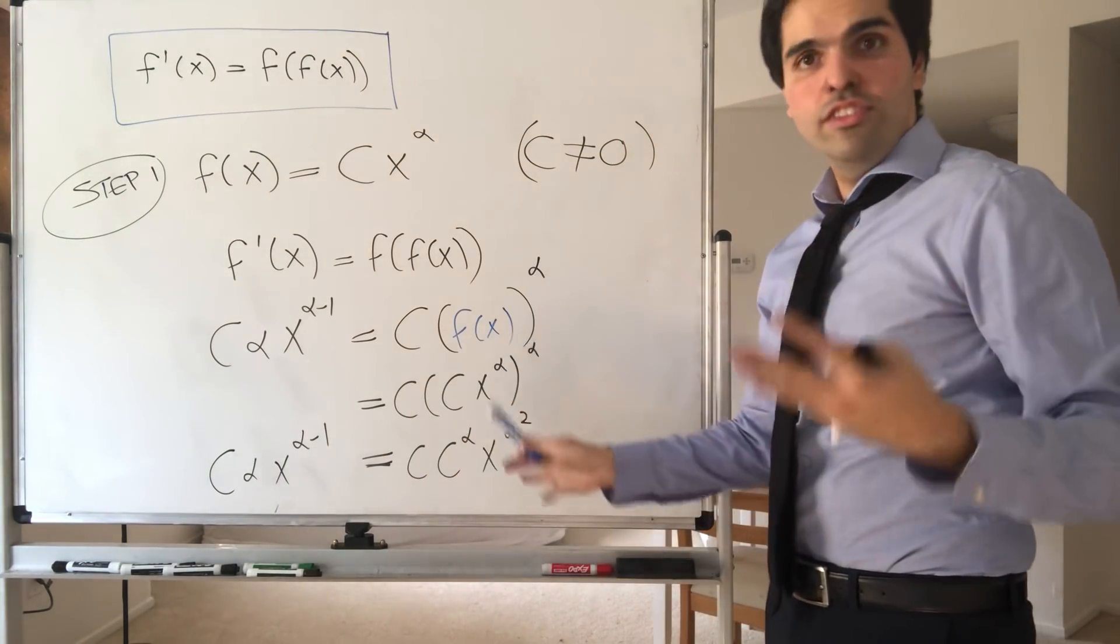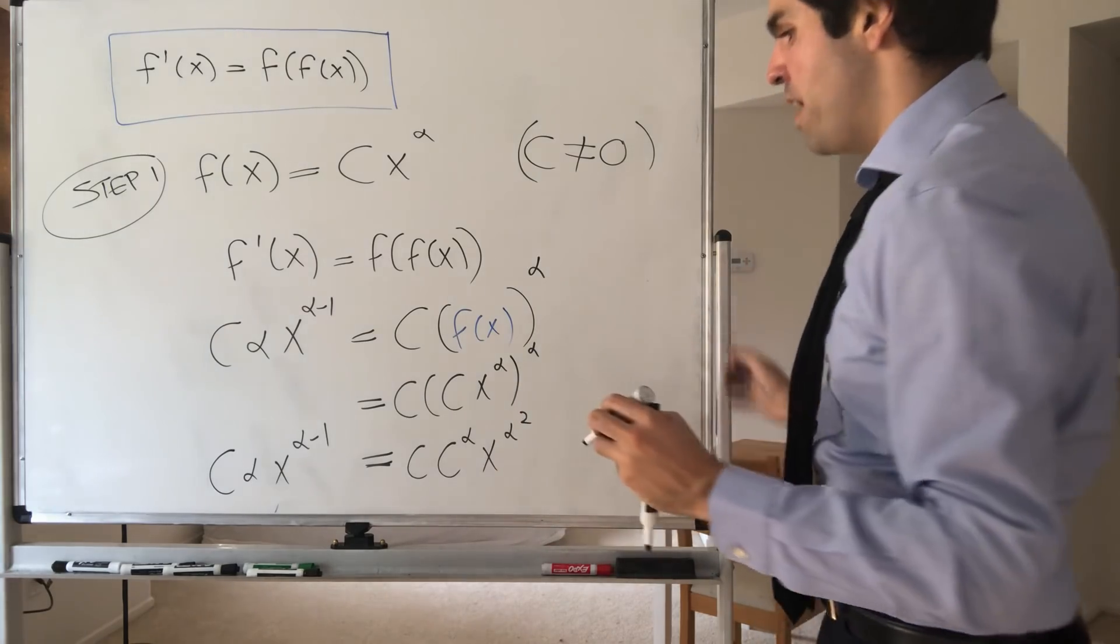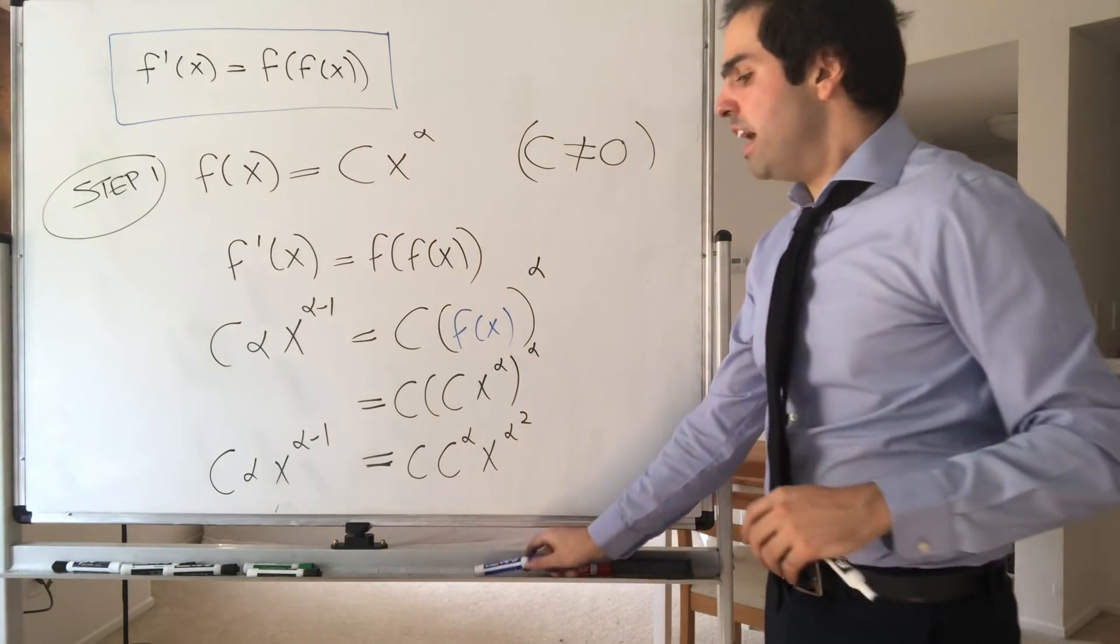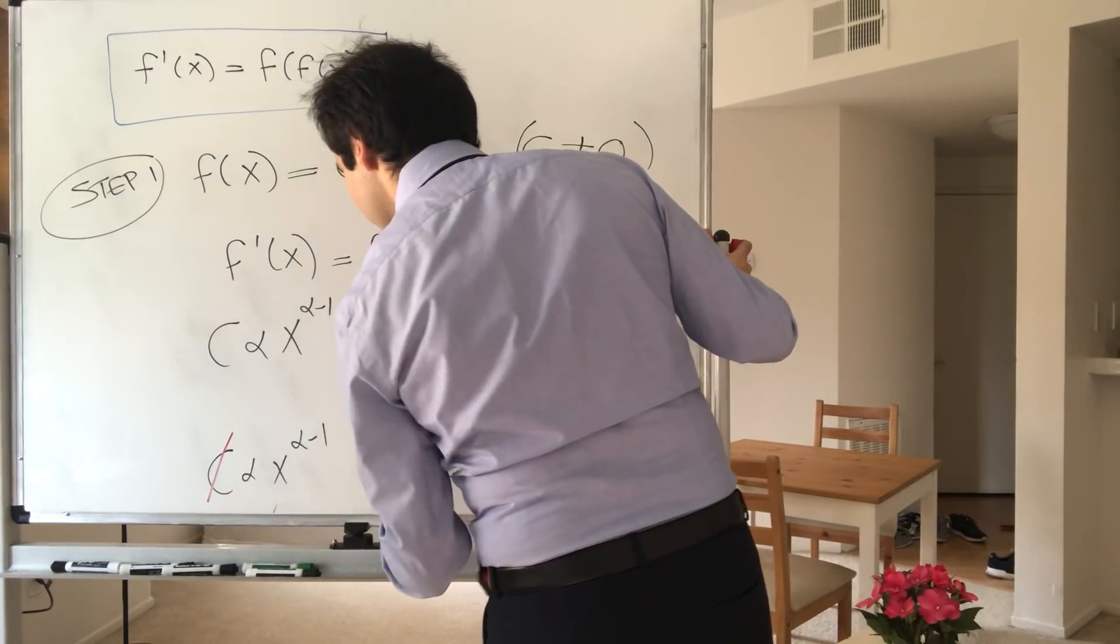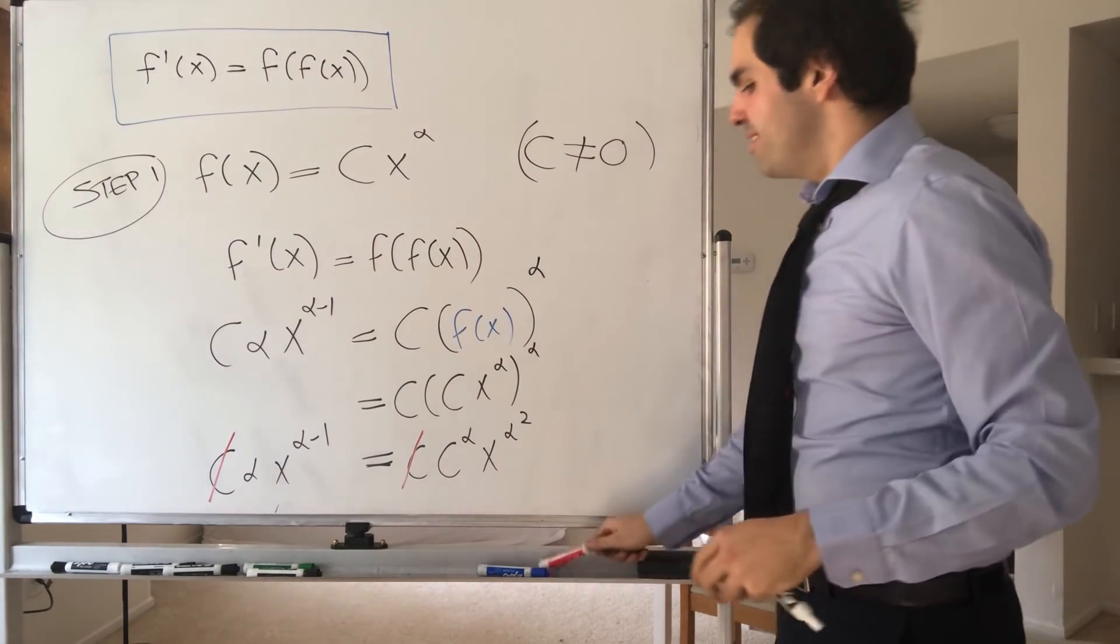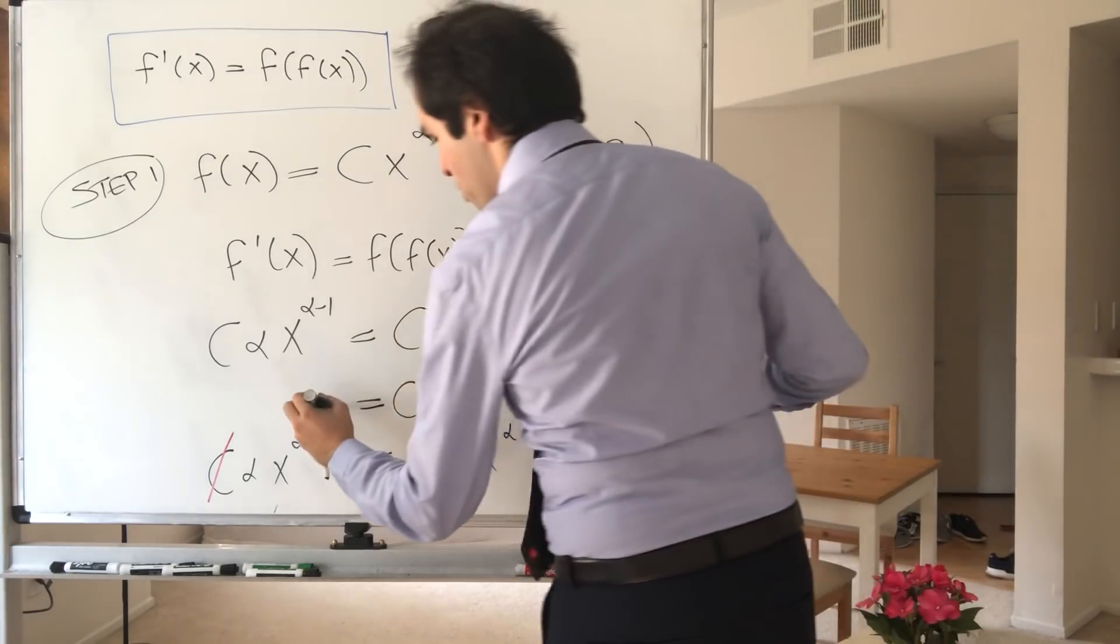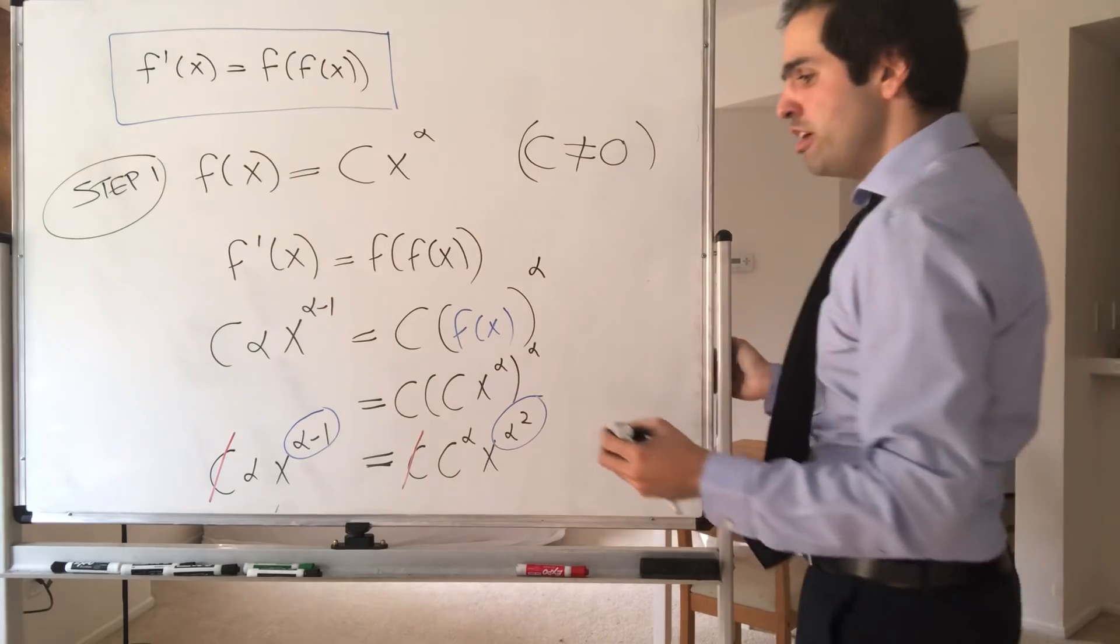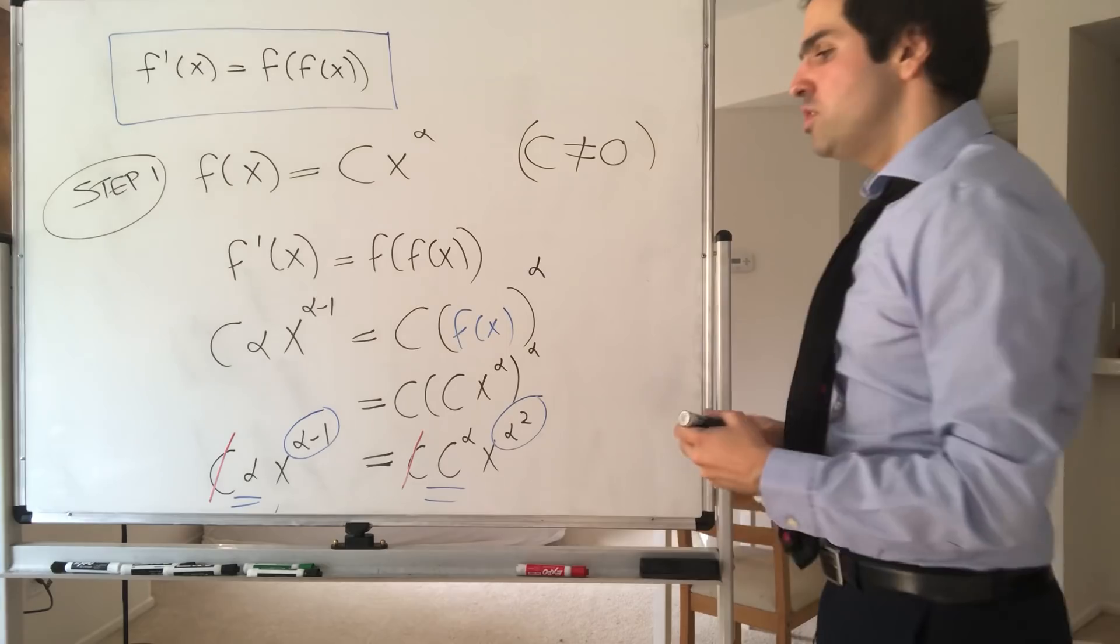Alright, and now, as is usual, we just need to compare the exponents and compare the coefficients. Now, notice, since c is non-zero, this c cancels out. And now, just compare the exponents, as is usual. So alpha minus 1 equals alpha squared, and moreover, compare the coefficients. So alpha equals c to the alpha, and that will allow us to solve for alpha and c.